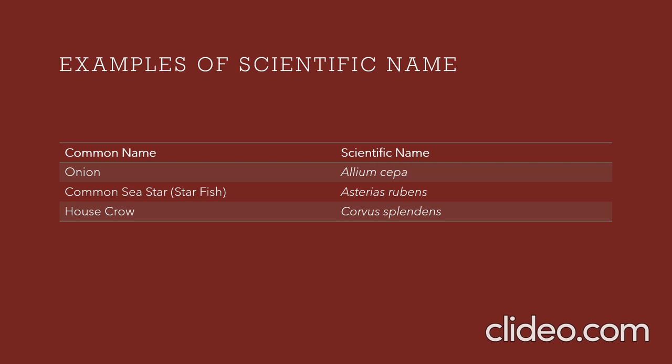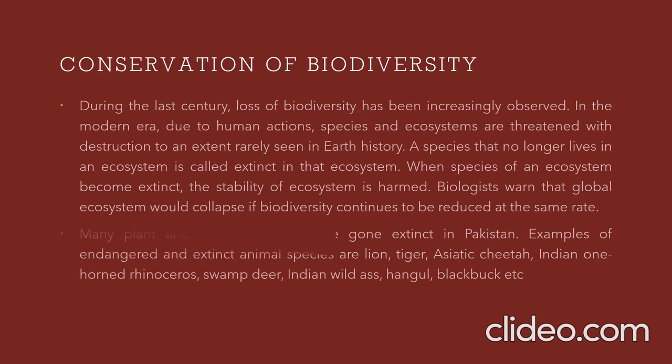Next topic: conservation of biodiversity. During the last century, loss of biodiversity has been increasingly observed in the modern era. Due to human action, species and ecosystems are threatened with destruction to an extent rarely seen in Earth's history. A species that no longer lives in an ecosystem is called extinct in that ecosystem. When species of an ecosystem become extinct, the stability of the ecosystem is harmed. Biologists warn that the global ecosystem would collapse if biodiversity continues to be reduced at the same rate. Many plants and animal species have gone extinct in Pakistan.